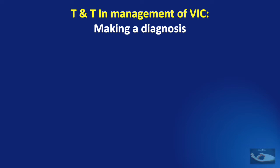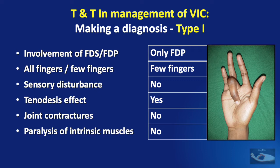It is very important to make a correct diagnosis and have an accurate understanding of the basic pathology in Volkmann's ischemic contracture, because it forms the basis of our management. A simple trick to understand the type we are dealing with: if there is involvement of only the FDP involving a few fingers, with no sensory disturbances, a tenodesis effect, no joint contractures, and no paralysis of intrinsic muscles, it is a Type 1.